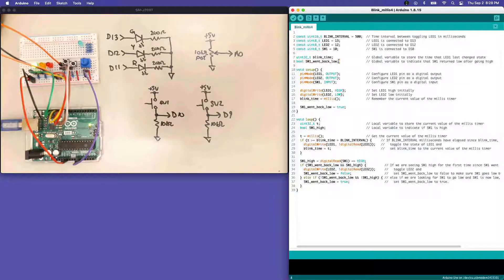The Boolean is going to represent that we've seen switch one go back low after it's been high. Tactile switch one is a momentary switch, which means it only is high when we push it. We want to remember that we've seen it go high and then see it go back low before we toggle the LED again.